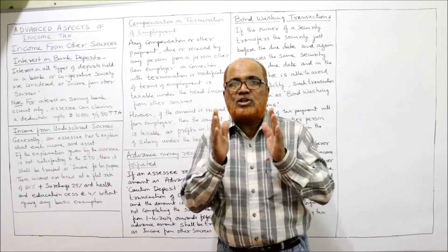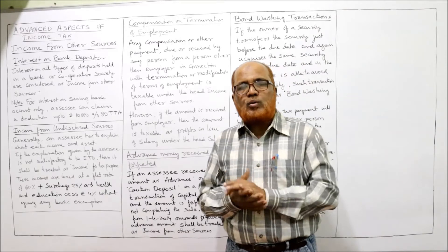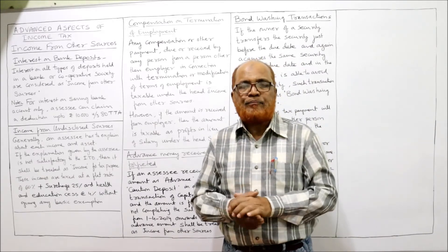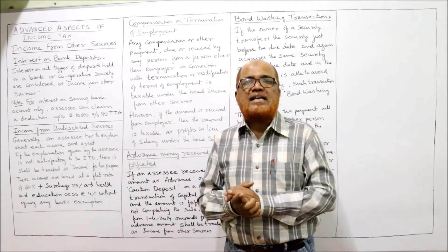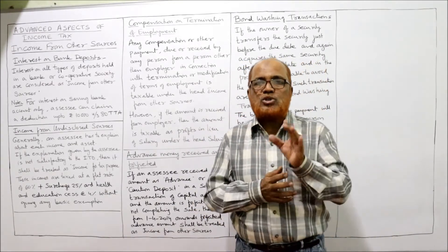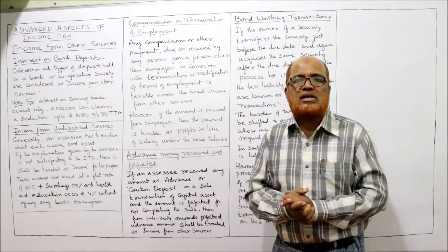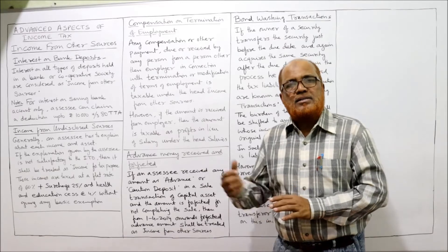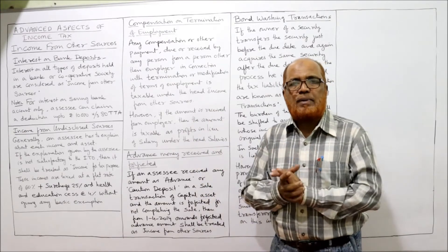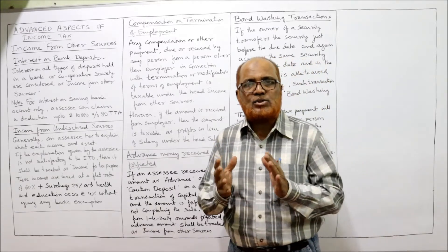This is the last video in which a few more points I am going to explain, and that will be the end of the theoretical part. The next video will start the problems. If you have not watched the earlier videos, go to the playlist of my channel, select the subject Advanced Aspects of Income Tax, Unit Number 2, watch the initial videos, be thorough on all the provisions. Take a screenshot of the notes which I have written on the board, then I will explain all the final points on income from other sources.